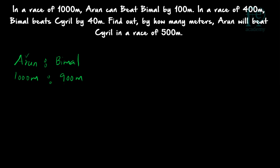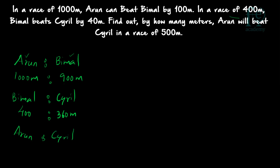So Arun is running 1000 meters and at that time Bimal is running only 900 meters. Now the second case: Bimal and Cyril. Bimal is running 400 meters, and Cyril will be running only 360 meters — Bimal is beating Cyril by 40 meters. You have to find out by how many meters Arun will be beating Cyril in a race of 500 meters, so we have to find a relation between Arun and Cyril.